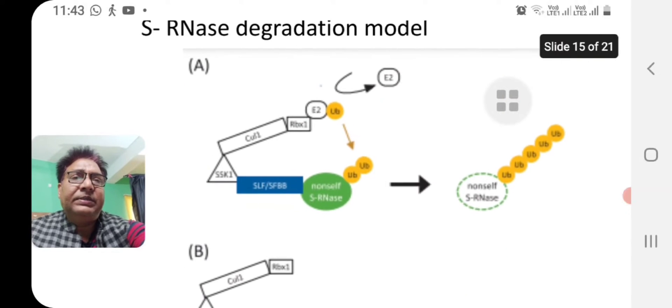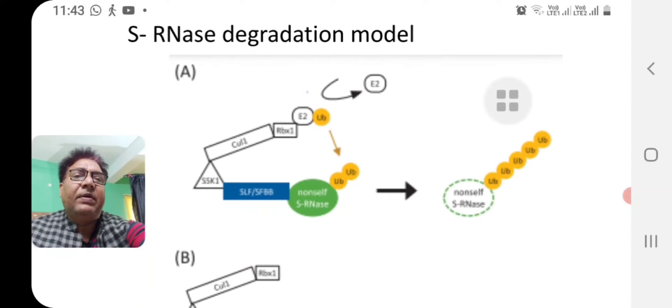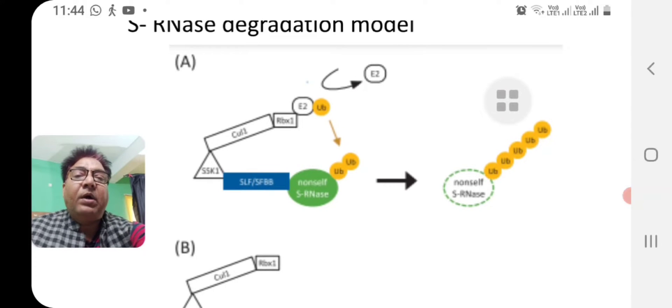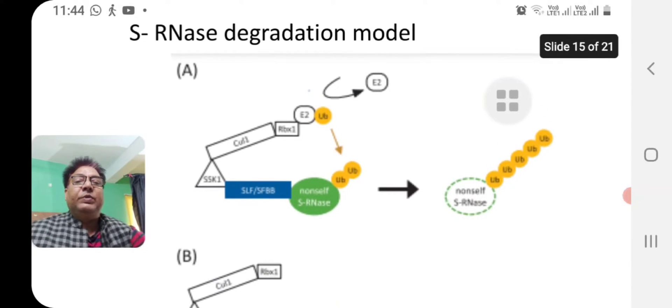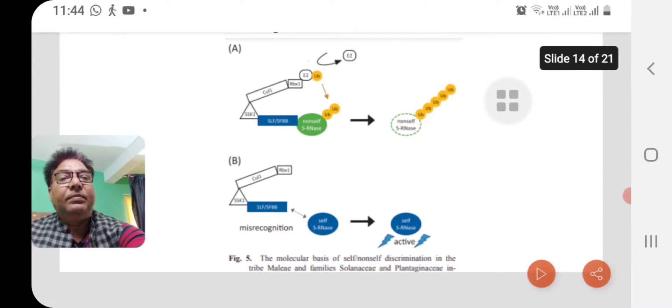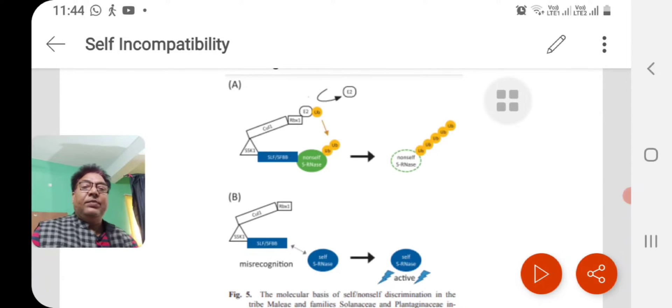The other concept was that in some other species, there are F-box ubiquitinization and proteasomal degradation of the sRNAs. Here what is being said is that there are F-box binding proteins which bind with the sRNAs, and they tag ubiquitin residues with the sRNAs, if the pollen is from compatible S allele.